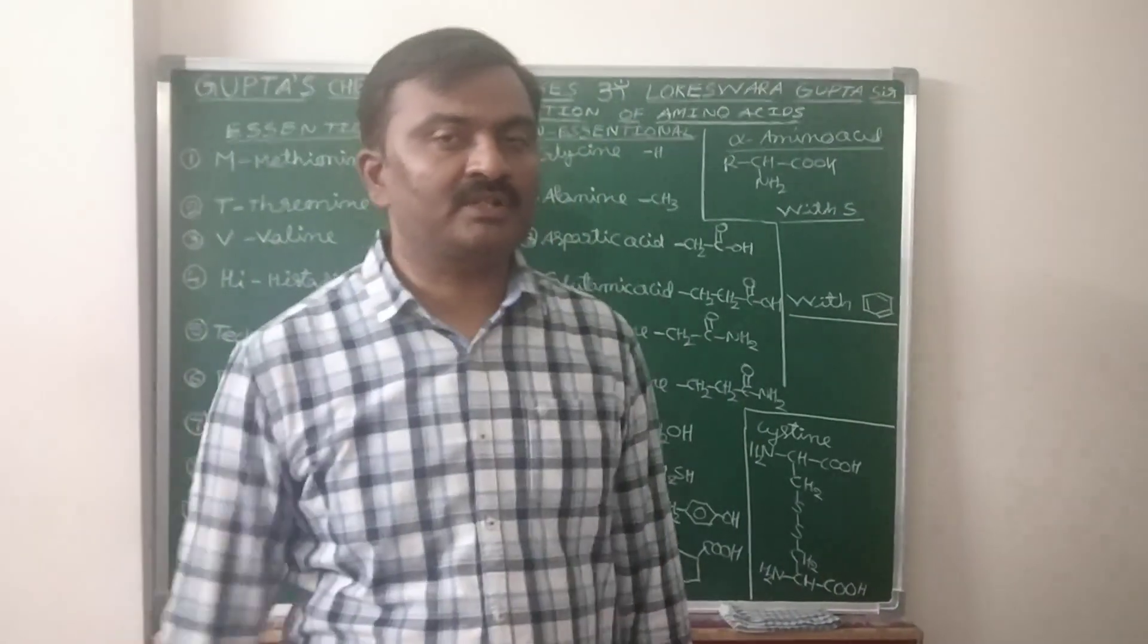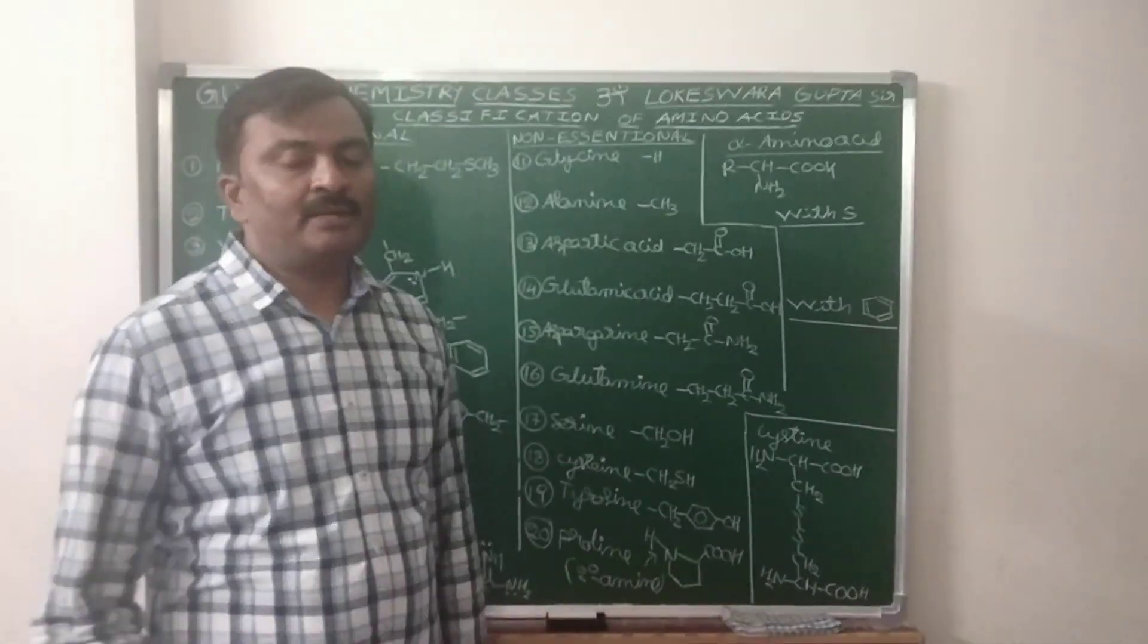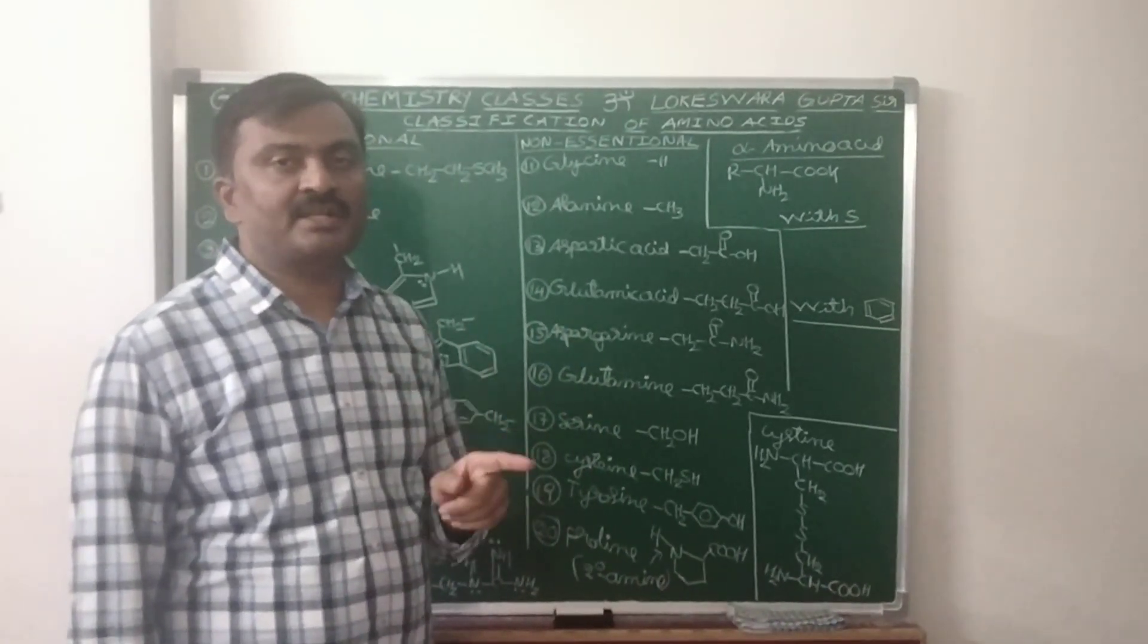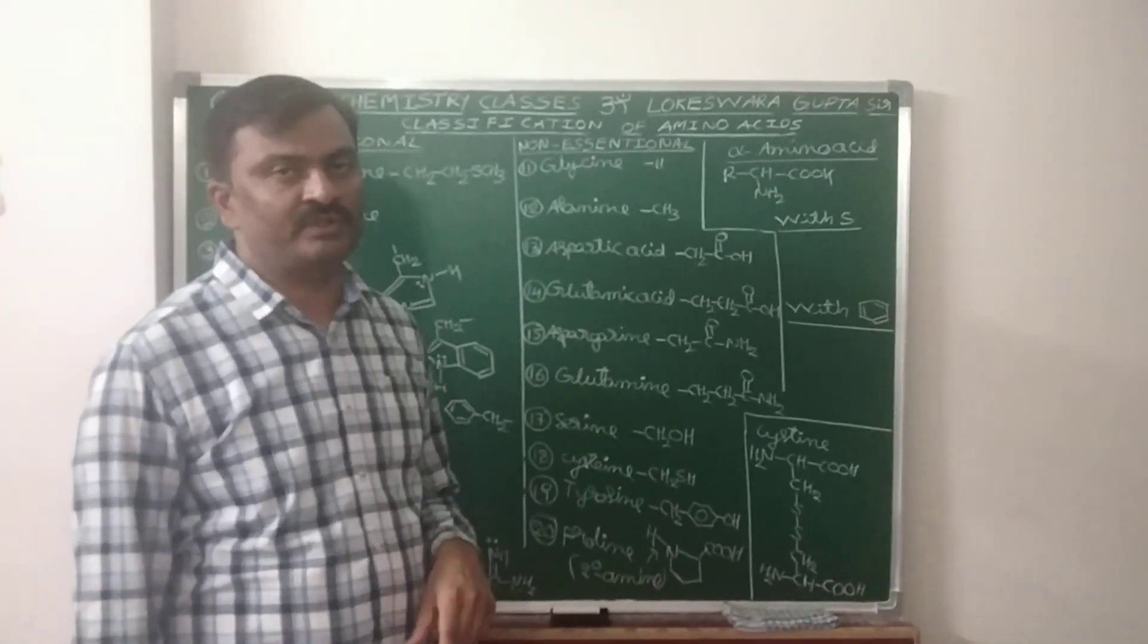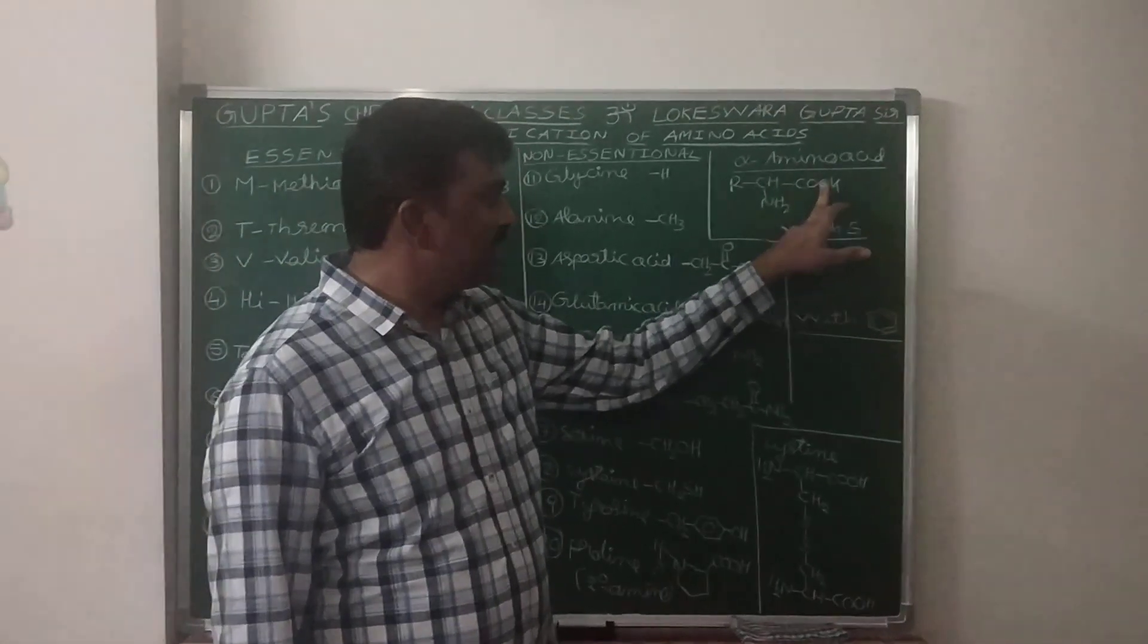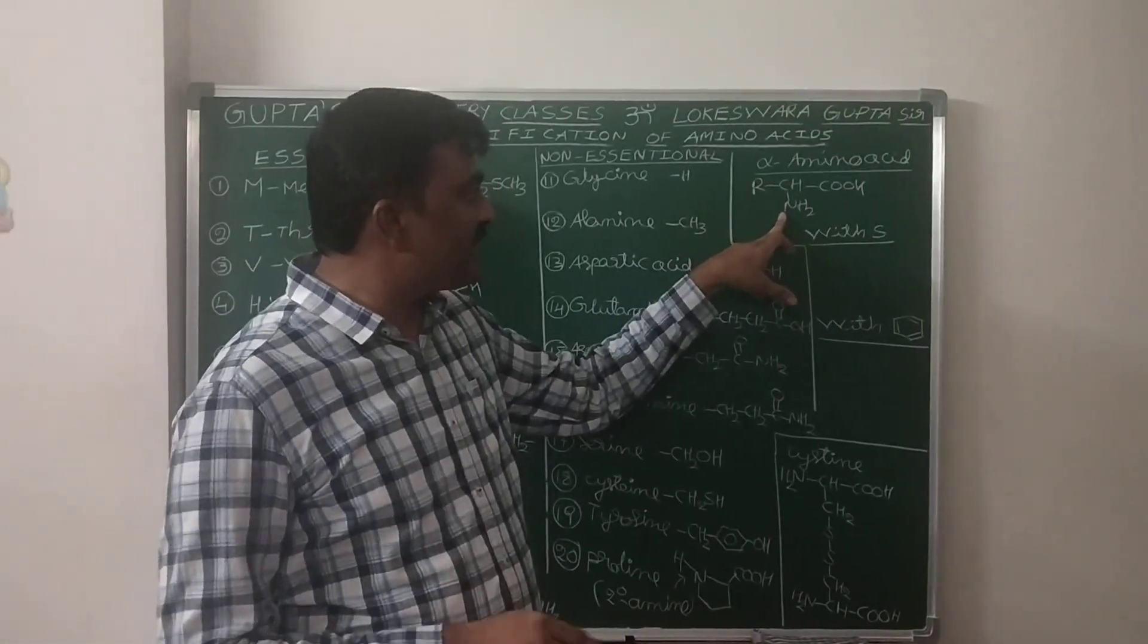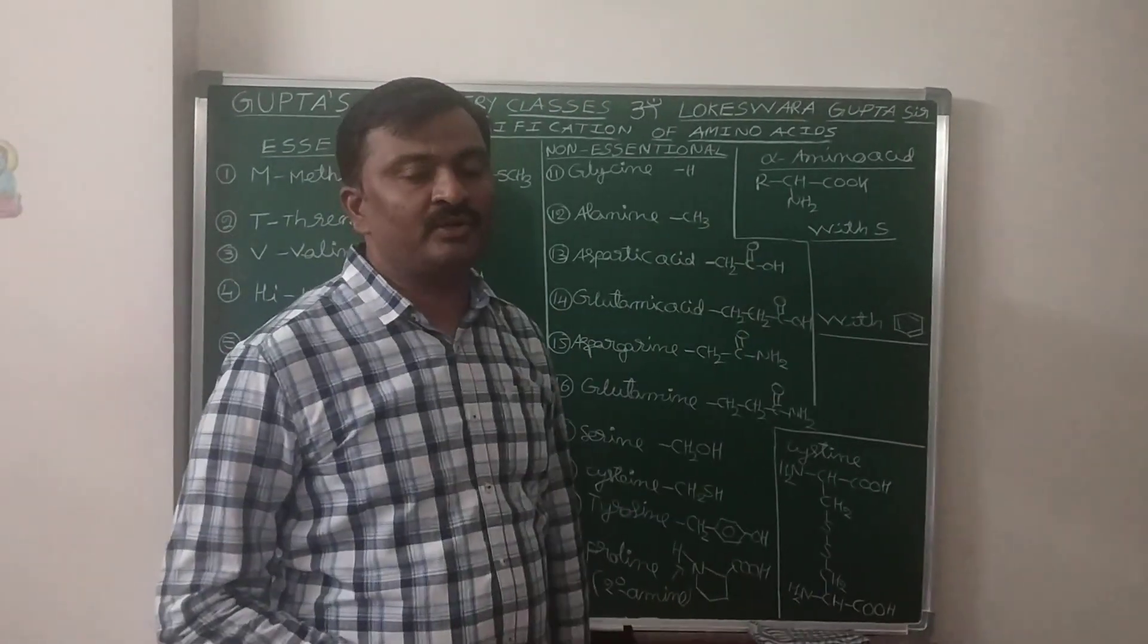Now come to the topic. Amino acids can be classified into alpha, beta, gamma amino acids based on the relative position of NH2 functional group and COOH. Carboxylic acid functional group, next carbon alpha, next beta, next gamma. Here NH2 is present at alpha position, so it is alpha amino acid.